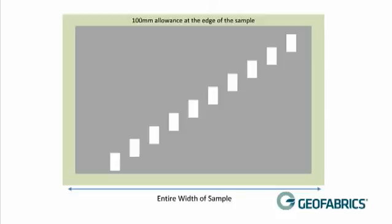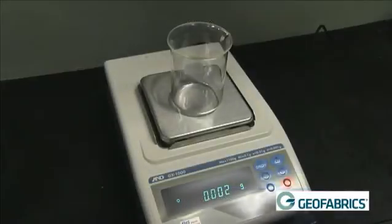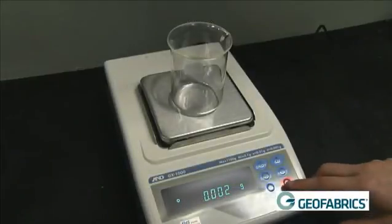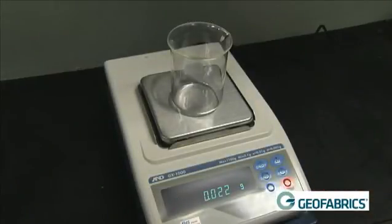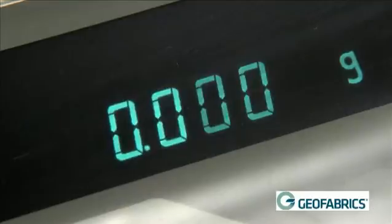One hundred millimetres from either edge, any visually non-representative, soiled or damaged part of the sample is discarded. Mass per unit area requires at least five specimens with a total area of 10,000 millimetres squared.